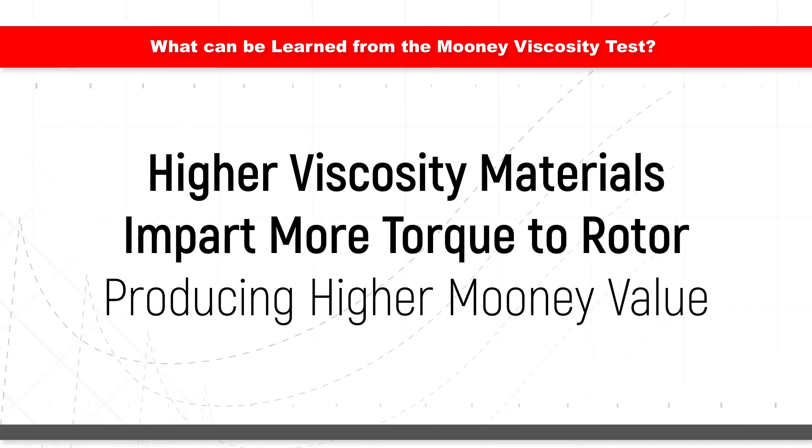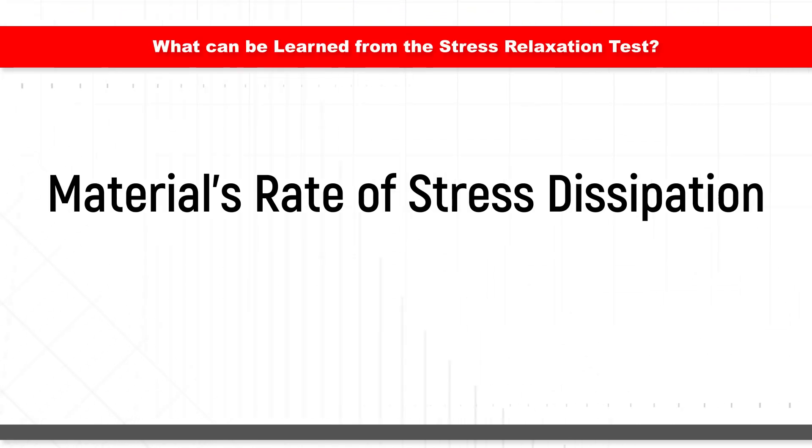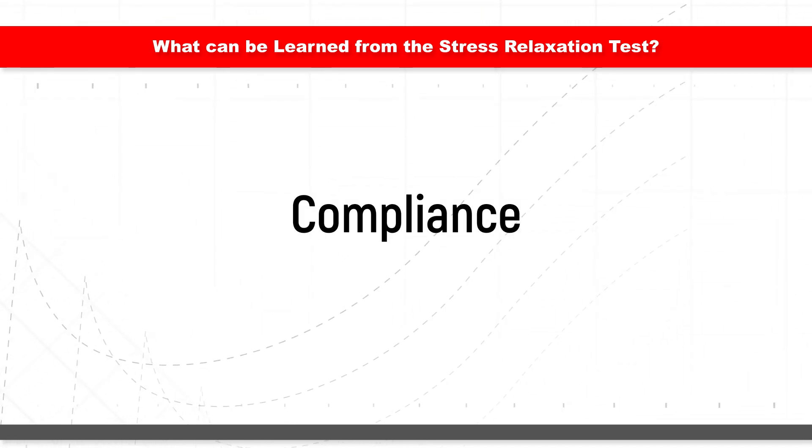A higher viscosity material will impart more torque to the rotor, producing a higher Mooney value. In the stress relaxation test, we measure the material's rate of dissipation of stress for predicting processability, green strength, nerviness, and compliance.